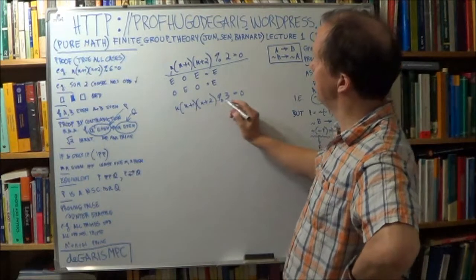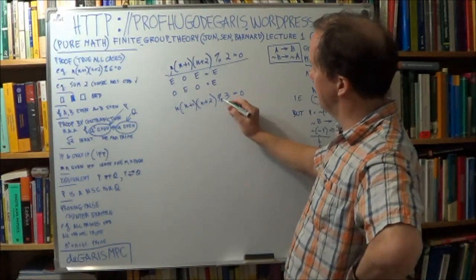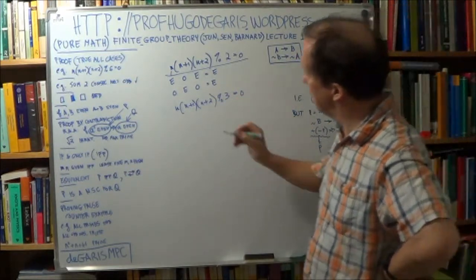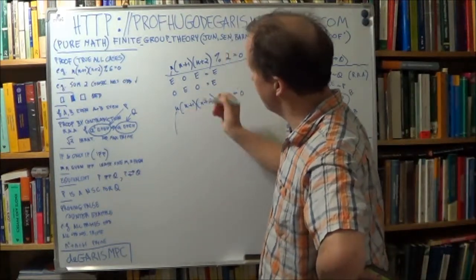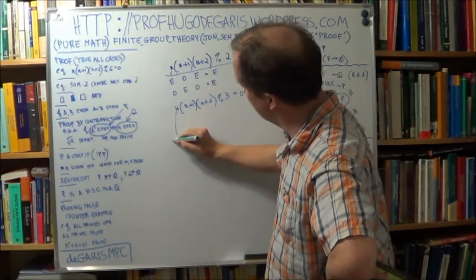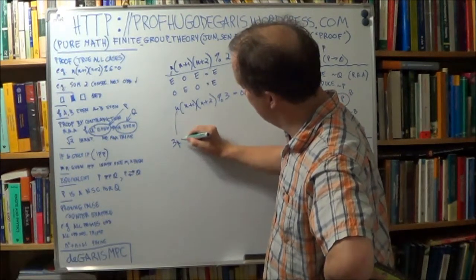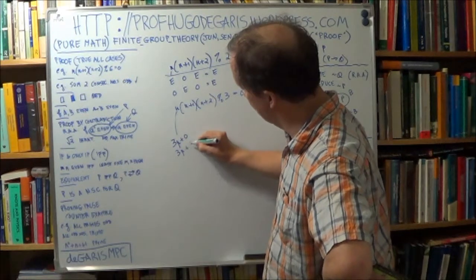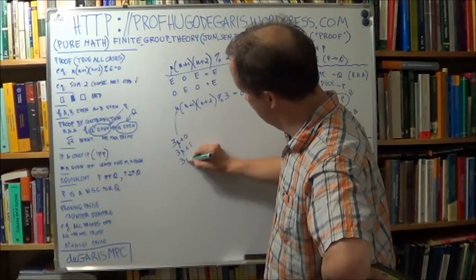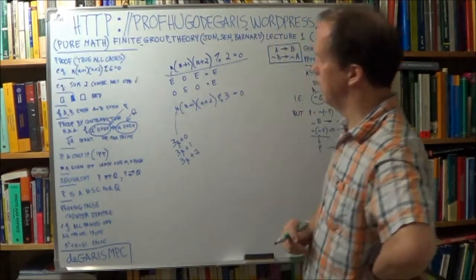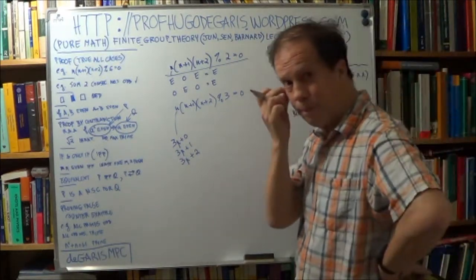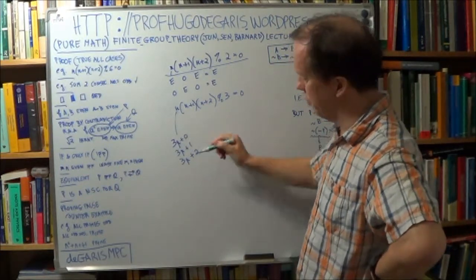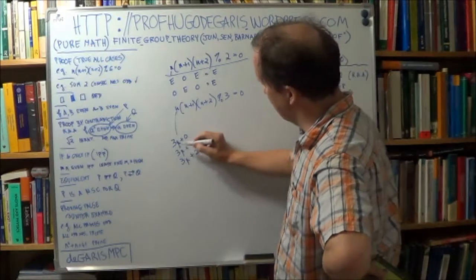All right. So how can we prove that you can divide this by 3? Well, n's an integer, right? So it can take the form of 3p plus 0, or 3p plus 1, or 3p plus 2, in that form, right? Yeah, that's the only three possibilities. All right. Well, let's take the first case.